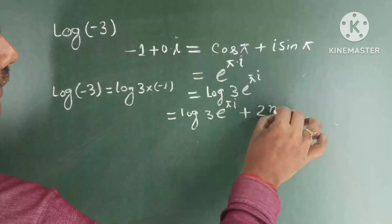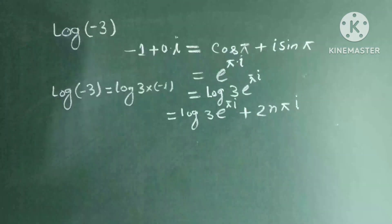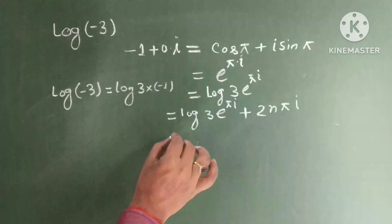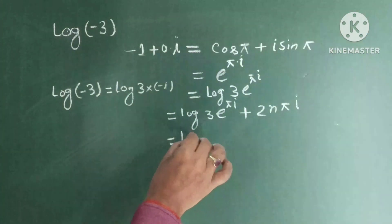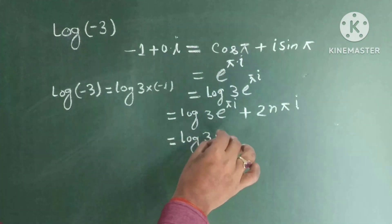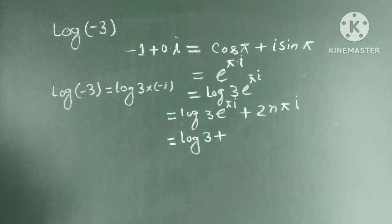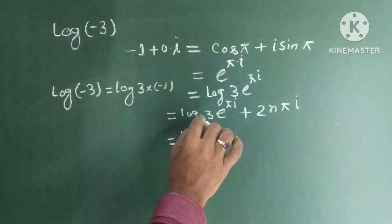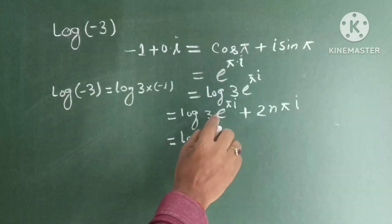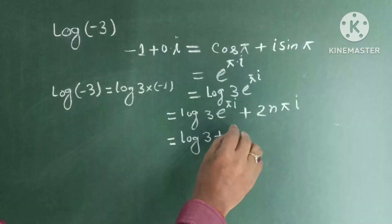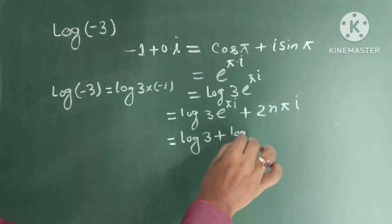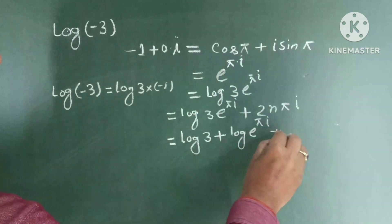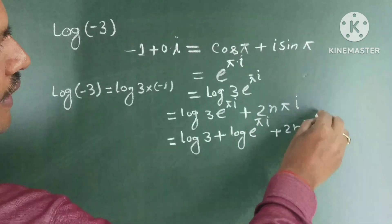Log 3 exponential pi eta plus 2n pi into eta. Since log of m into n equals log m plus log n, we get log of exponential pi eta plus 2n pi eta.